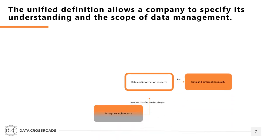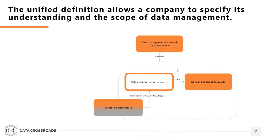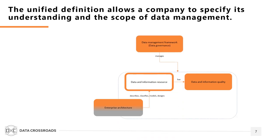Data has quality. Enterprise architecture describes, classifies, models, and designs data and information. By enterprise architecture, I mean business, data, application, and technology architecture. Business architecture is not part of data management, but it has a relation to data, so it's useful to take it into consideration. Data governance — or data management framework — is the last component of data management from the narrow point of view. All boxes marked orange represent this narrow viewpoint. The enterprise architecture box is marked half orange because application and technology architecture belong to the IT domain.